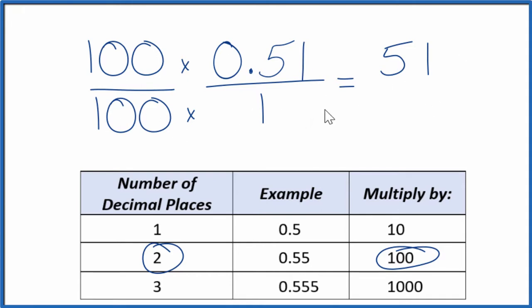So 100 times 1, that's 100, and we have our fraction. The decimal 0.51 is equal to the fraction 51 over 100, and we can't simplify this any further.